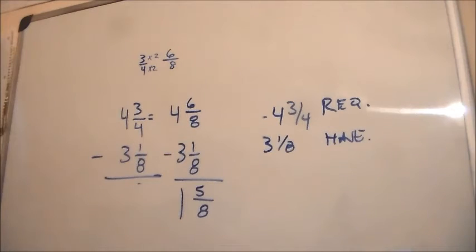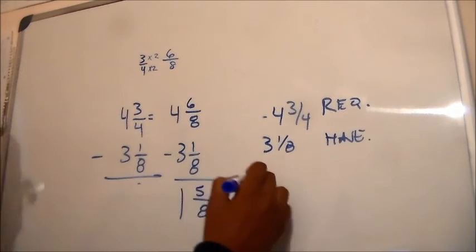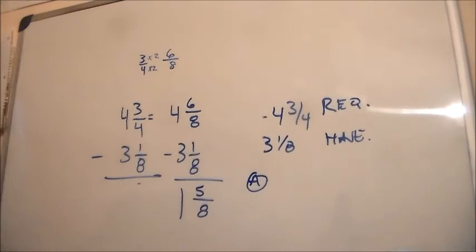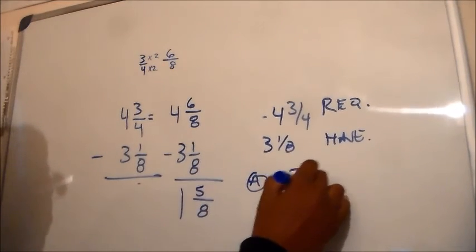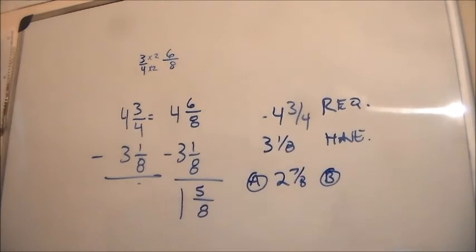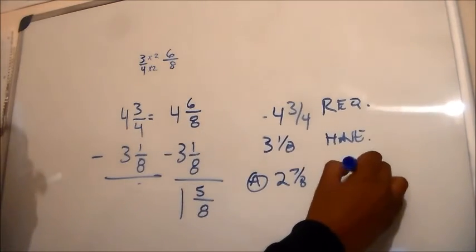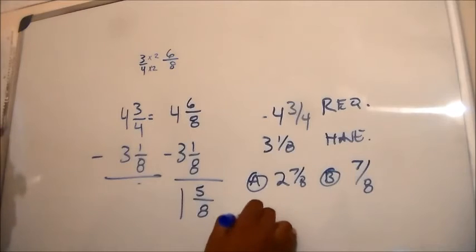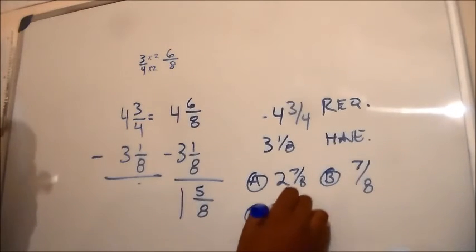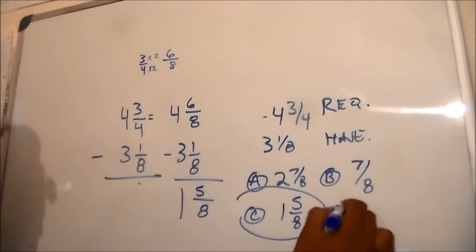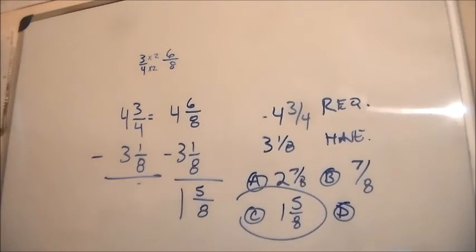And what I should have done that I didn't do was put down our options. A was actually two and seven eighths. B was seven eighths. C was one and five eighths. Our answer. And D was five eighths.